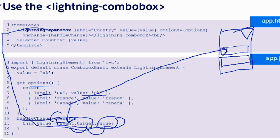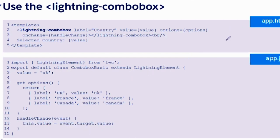Make sense? event.target will always give you the target where it happens, and then from that target you can call any property — label, value, options. This is going to give you any attribute of the tag where the event happened.